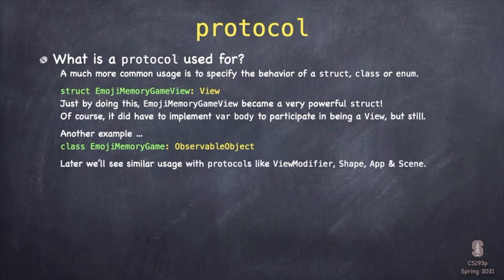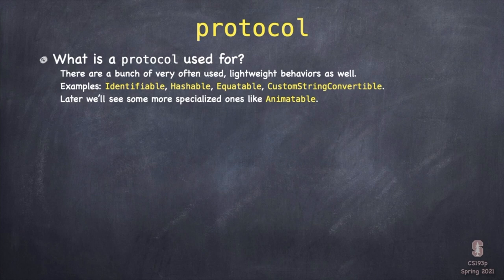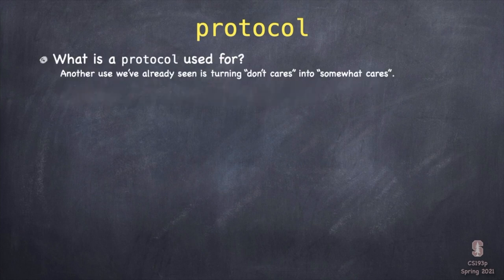We'll see some other protocols like ViewModifier, Shape, App, and Scene this lecture — these are all protocols you'll be declaring classes or structs to behave like. There are also lighter-weight protocols like Identifiable, Hashable, and Equatable. There's one called CustomStringConvertible that allows your struct to appear in string interpolation with custom output. And we'll see more specialized ones later in the course, like Animatable. These are all the same kind of thing: a struct or class says it behaves like some protocol, meaning it implements all those vars and functions.